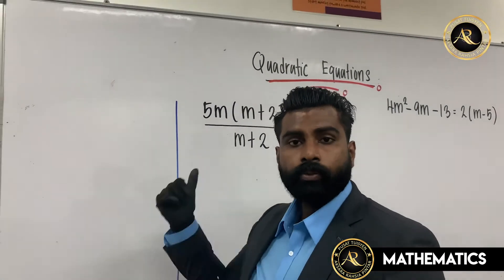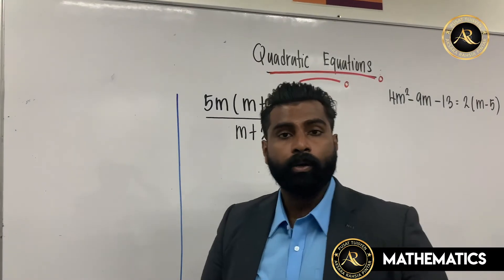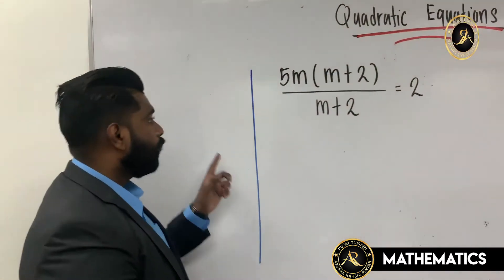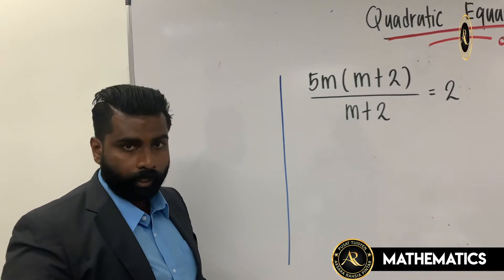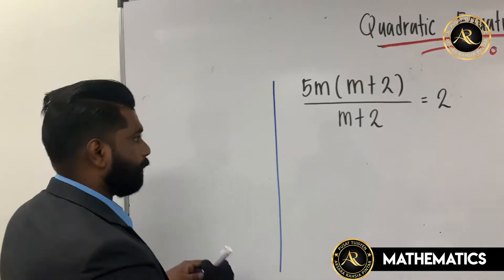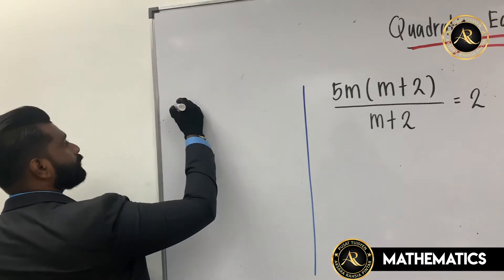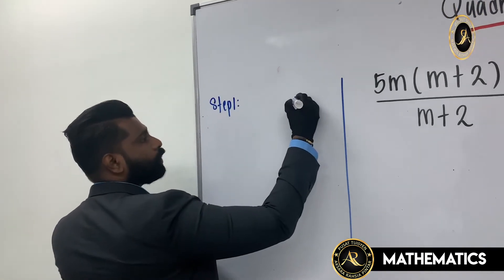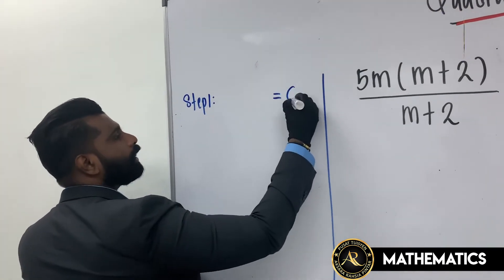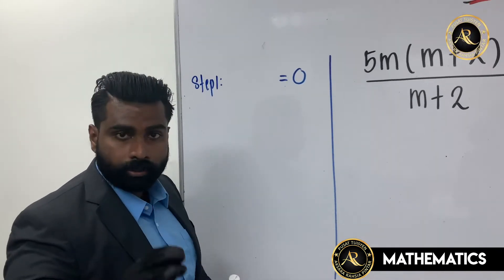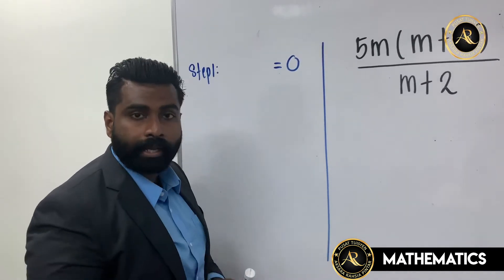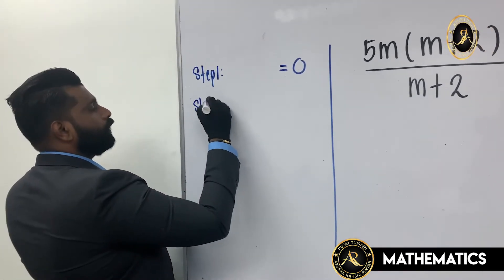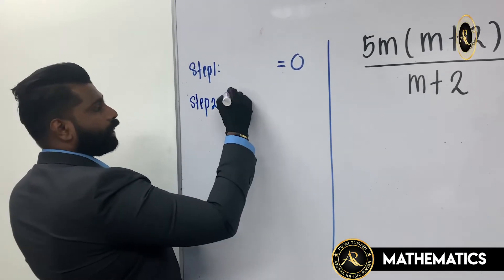Hi students, today I'm going to explain about quadratic equations. To answer the quadratic equation, we have a few steps. Step number one: you must make sure the entire equation must equal to zero — the equation must equal to zero.